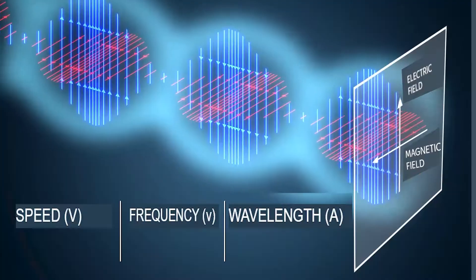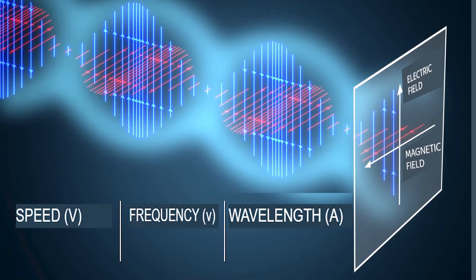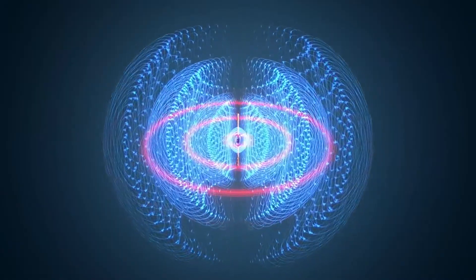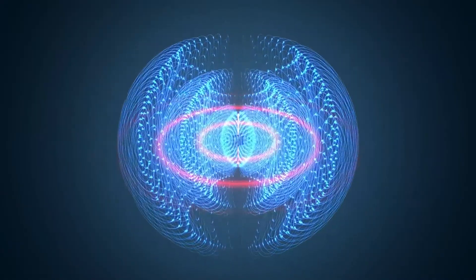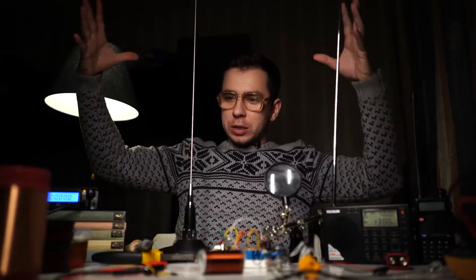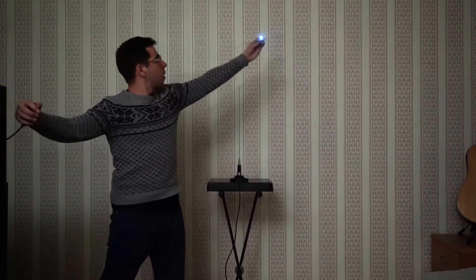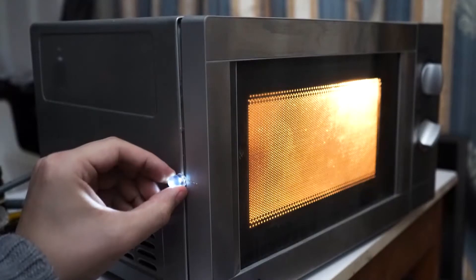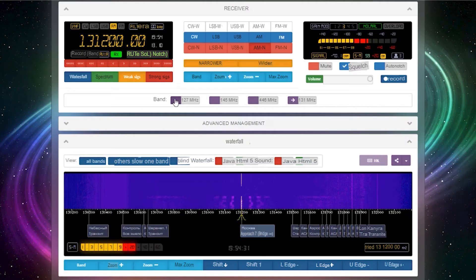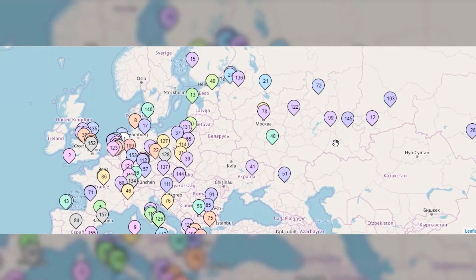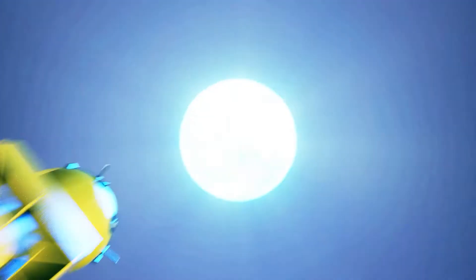Let's figure out what kinds of radio waves there are, what they look like, and how many of them are in your apartment. We will assemble a device that allows you to see Wi-Fi and even touch radio waves, and we will eavesdrop on other people's conversations from almost all over the world. Let's go.